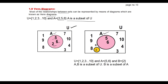Similarly, consider one more example where a universal set contains sets A and B, where A = {5, 6} and B = {2}. Here we have two sets A and B. A is a subset of the universal set and B is also a subset of the universal set.